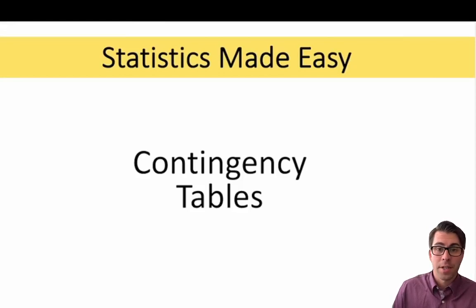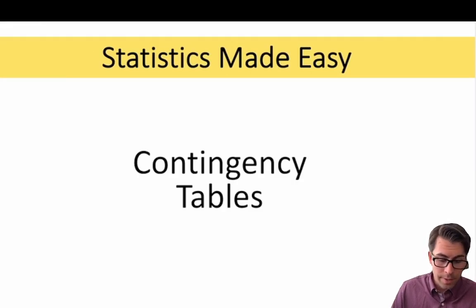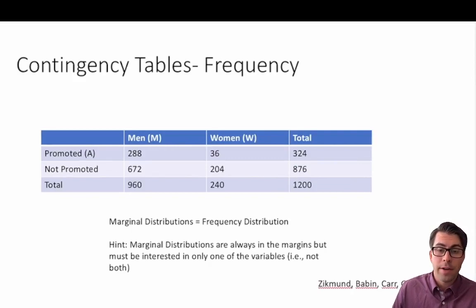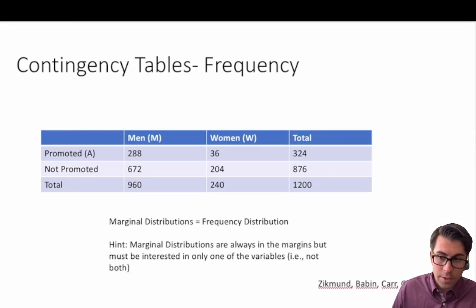In this video we're going to talk about contingency tables and walk through a few practice problems. A contingency table is an effective way of demonstrating information about two categorical variables with a variety of different levels.